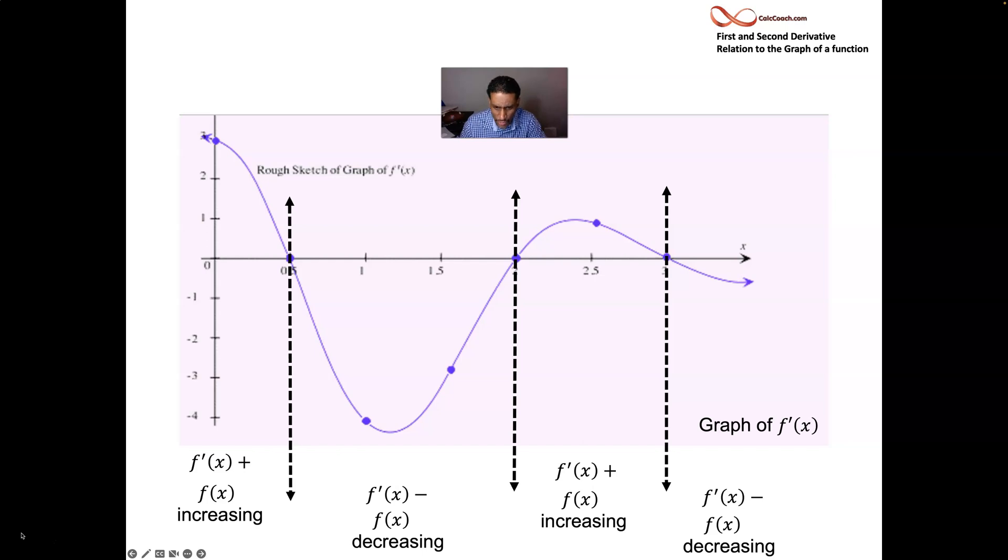And then at x equals 2, you're changing from decreasing to increasing. That's going to be a local minimum of your function, not of your derivative, of your function. We're looking at a graph of the derivative. We're not looking for max and mins on that. The information that we get out of that leads to max and mins on the function.